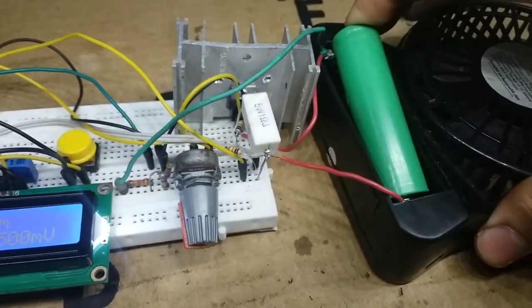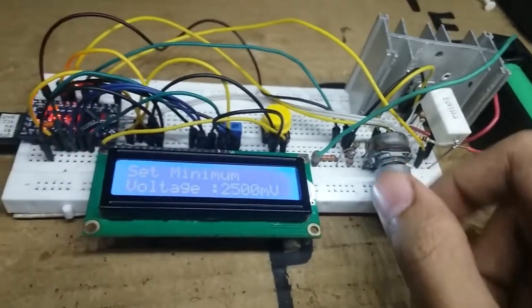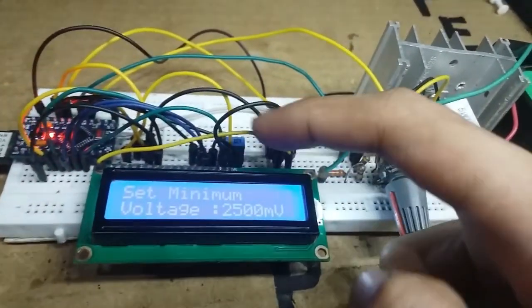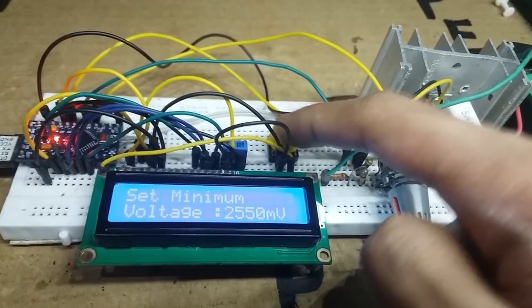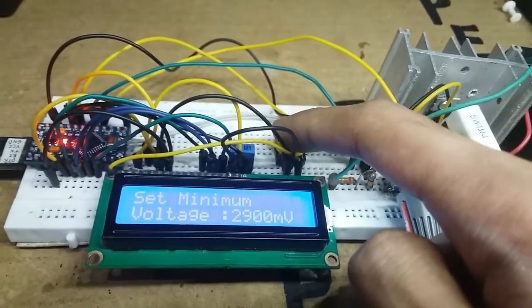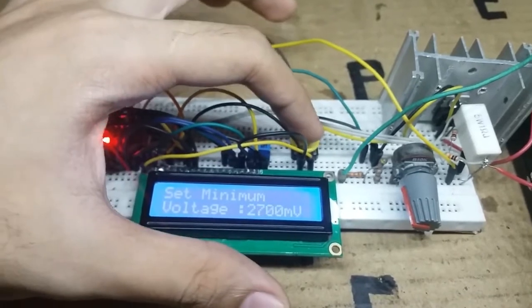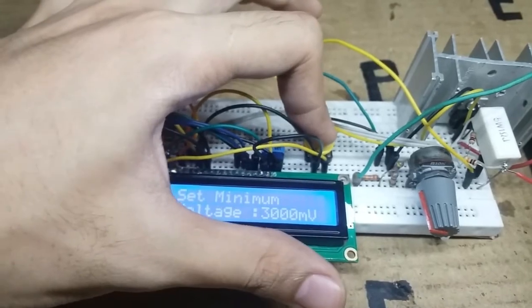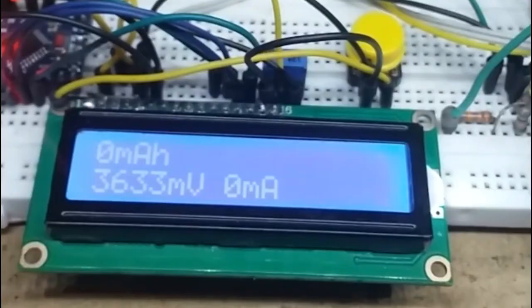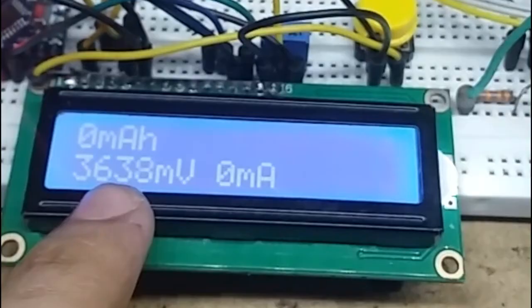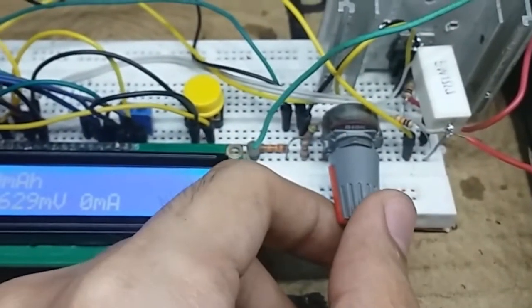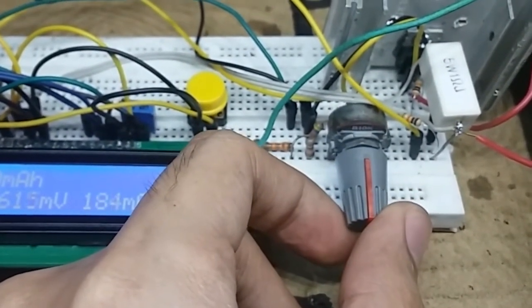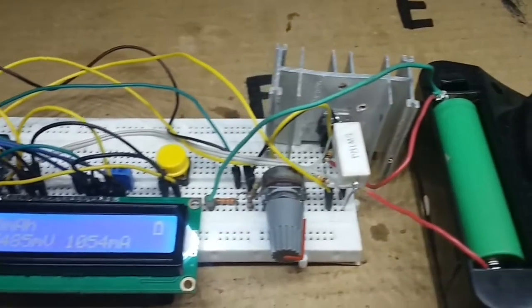First, insert the battery and then set the minimum voltage you want it to stop discharging. Just click it to increment. Generally, 3V is a good minimum value. To select it, just long press and now, it starts calculating the capacity. This is the actual voltage of the battery. And this is the actual current it discharges. Just adjust the potentiometer to the current you want. And then, wait for it.